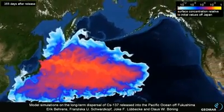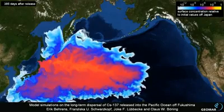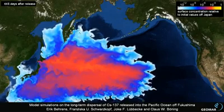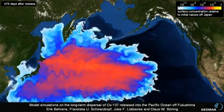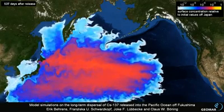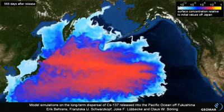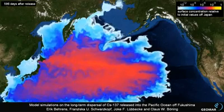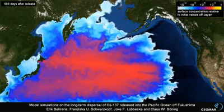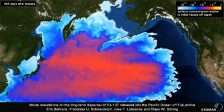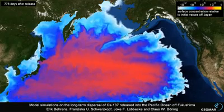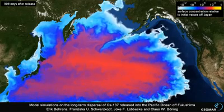After one year, maximum concentrations are diluted by two orders of magnitude and have already crossed the dateline, further heading east. The southern edge of the tracer cloud reaches the Hawaiian islands after about two years, while the northern edge has begun to enter the Bering Sea.